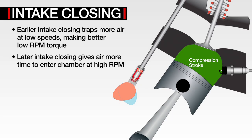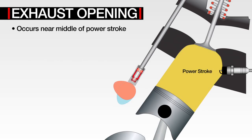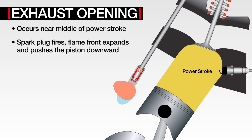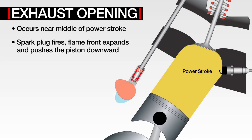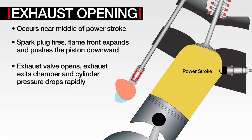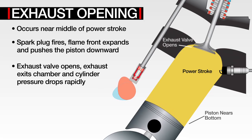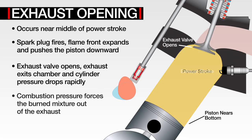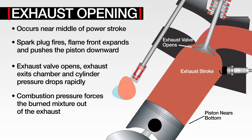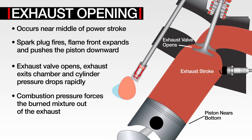Thus far we have discussed the intake valve events. We will now move on to the exhaust side. Exhaust opening occurs near the middle of the power stroke, after the spark plug is fired and the flame front has expanded, pushing the piston downward. Once the exhaust valves open, the exhaust begins exiting the chamber and cylinder pressure drops rapidly.